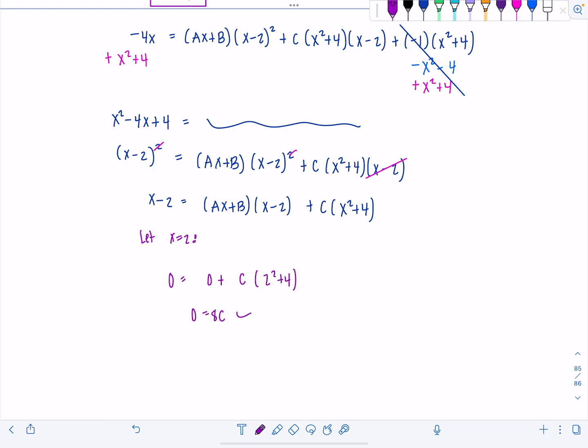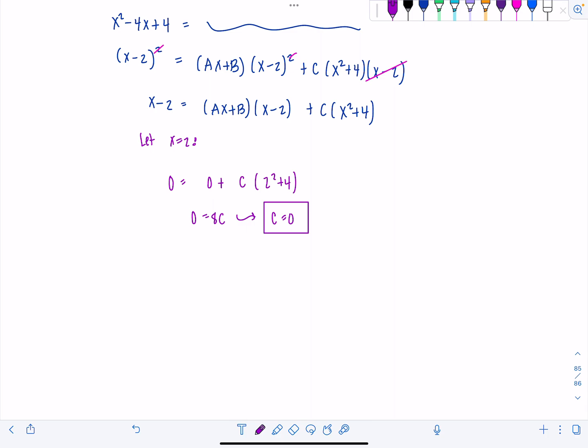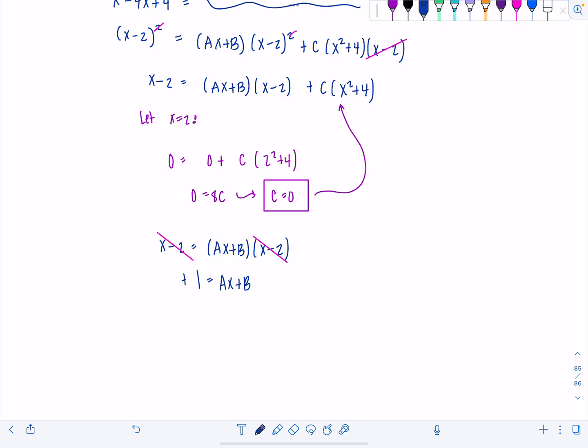Let x equal 2. 0 equals 0 plus c times 2 squared plus 4. So 0 equals 8c. C is 0. And do we have more to do? Yeah. Just plug in 0 for c there. So now we're back to x minus 2 equals ax plus b times x minus 2. I can divide by x minus 2 on both sides. Just cancel that out. So then 1 equals ax plus b. There's basically like a 0x over here, right? So that means a is 0 and b is 1. Oh my god. We made it.